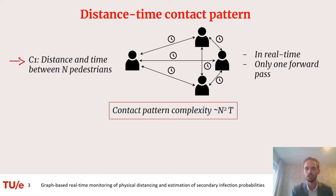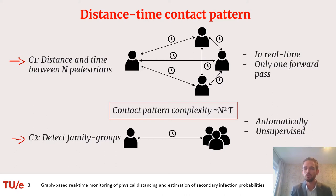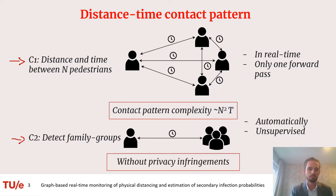The second challenge is based on the fact that not everyone is required to distance from one another. What I mean by this is that families don't necessarily need to social distance. So we need a way to detect family groups in our dataset, automatically and unsupervised, without infringing any privacy. We want to do this solely based on the distance and time contact pattern between all the pedestrians.